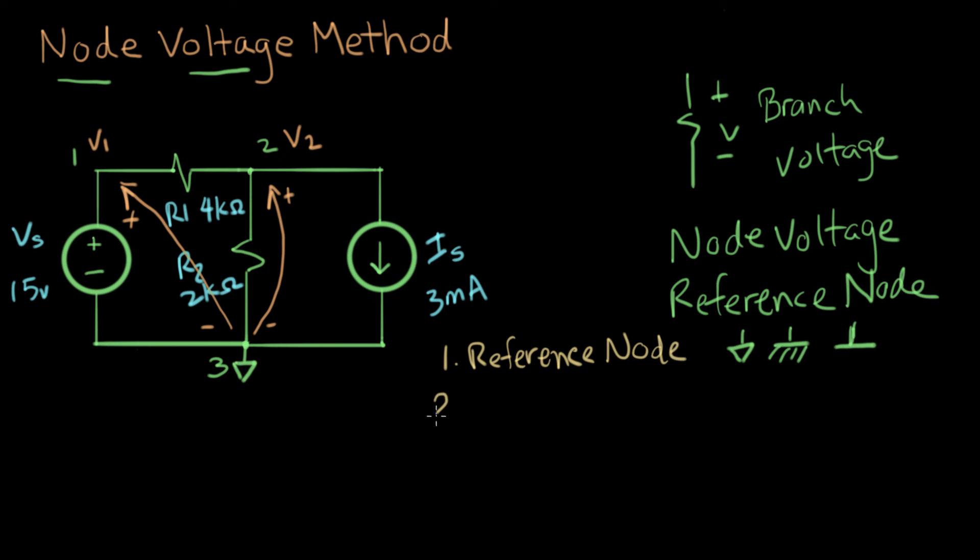And the second step is to name the node voltages. And we already did that. We named our nodes V1. That node there is V1 and that node there is V2, with respect to the reference node, which is down there at node three. Whenever you talk about node voltages, there's always an assumption that one of the nodes is a reference node.